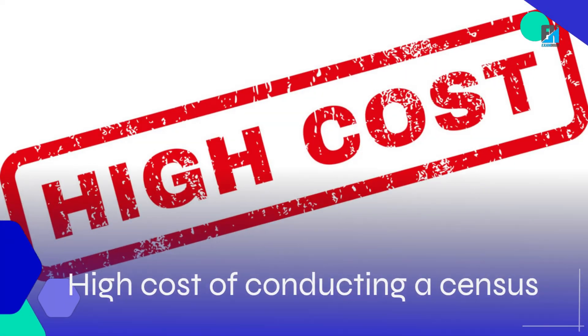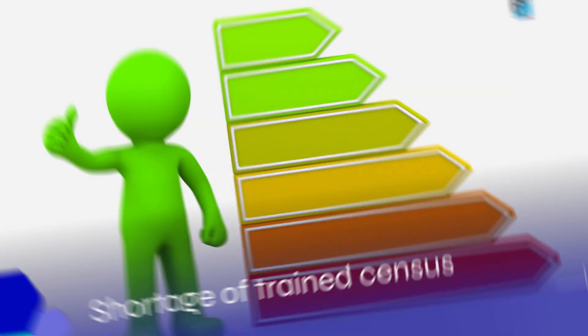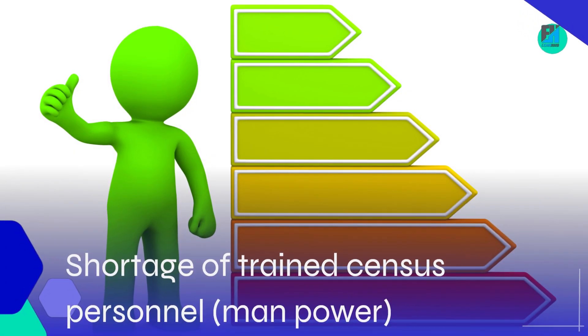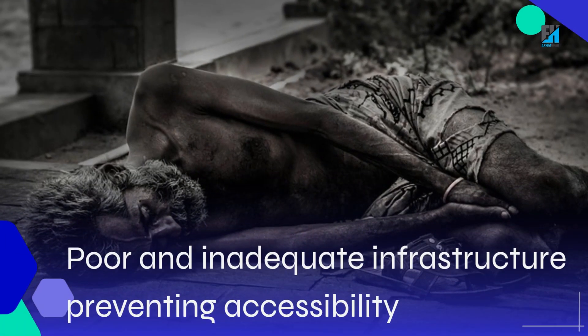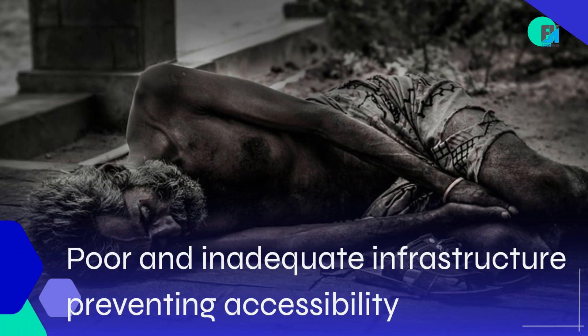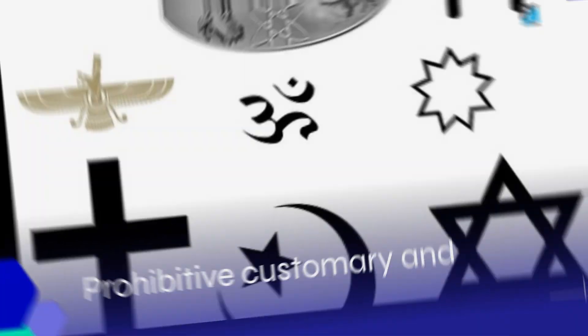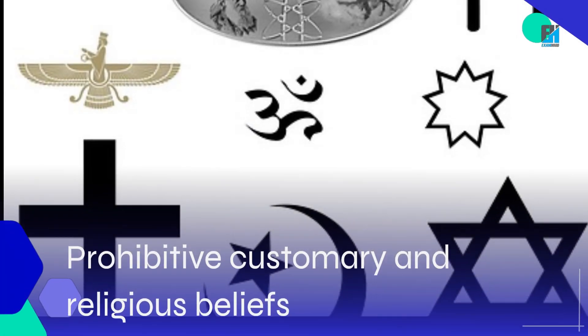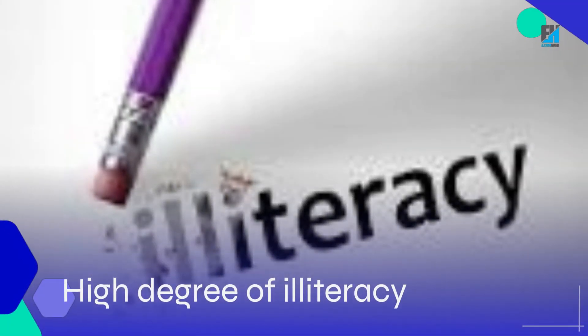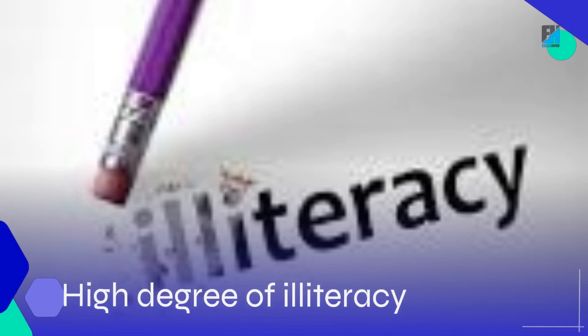Problems of conducting census in Nigeria and West Africa include: high cost of conducting a census, shortage of trained census personnel and manpower, poor and inadequate infrastructure preventing accessibility, prohibitive customary and religious beliefs, and a high degree of illiteracy.